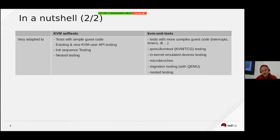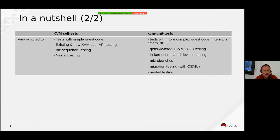The part that is tested is different in KVM self-tests and KVM unit tests. KVM self-tests are very well adapted to the test of existing and new KVM user APIs — that is what they are meant for — and the tests involve very simple guest code.